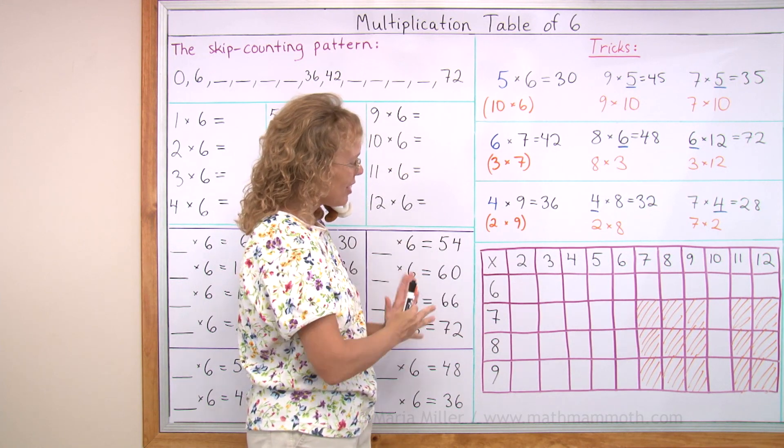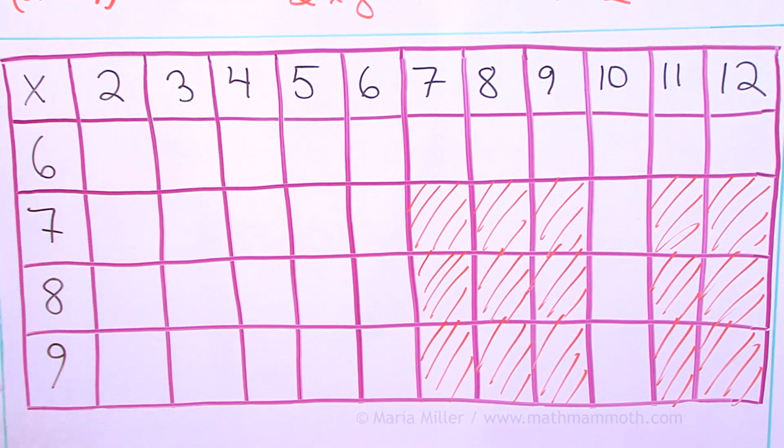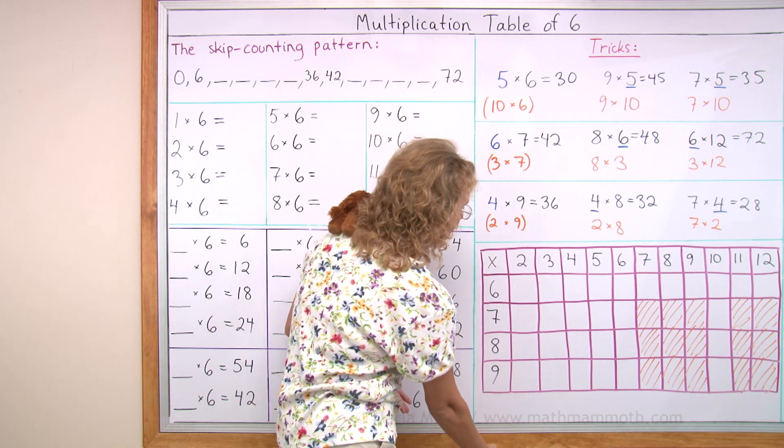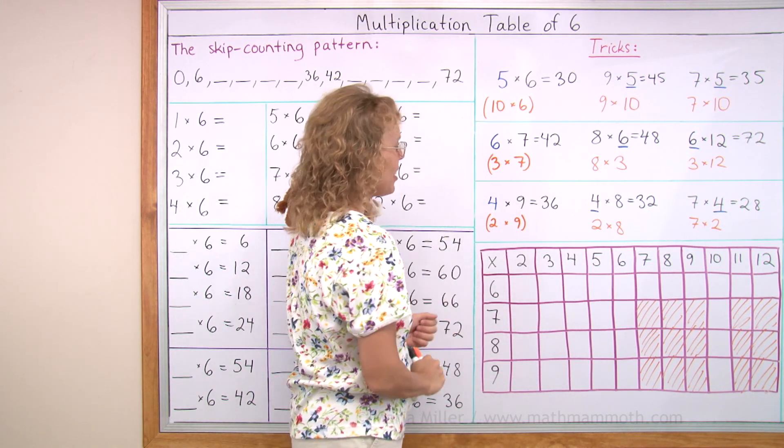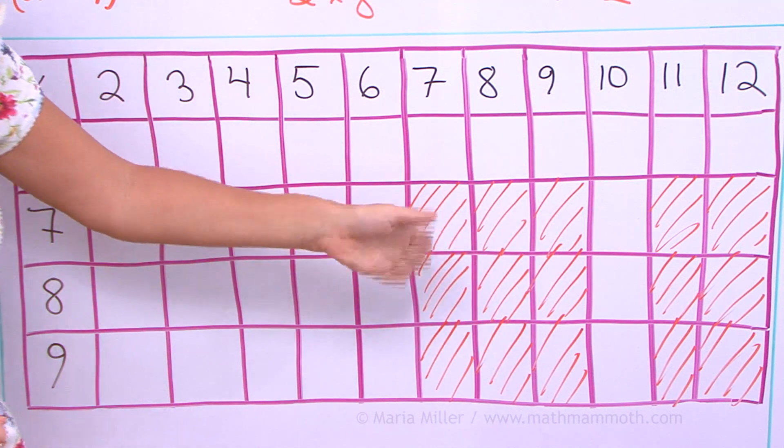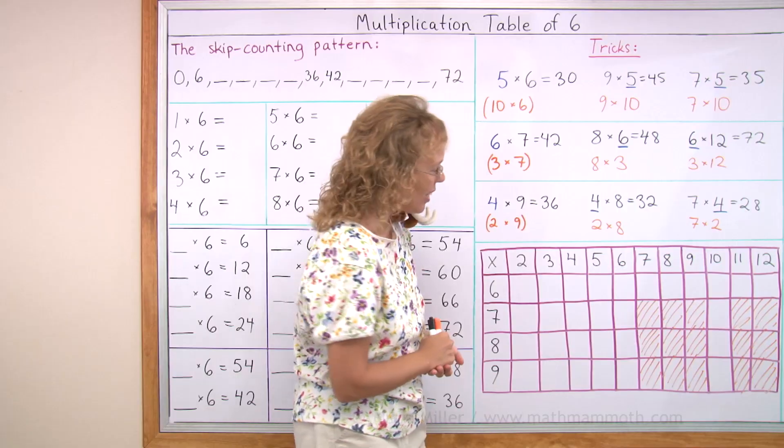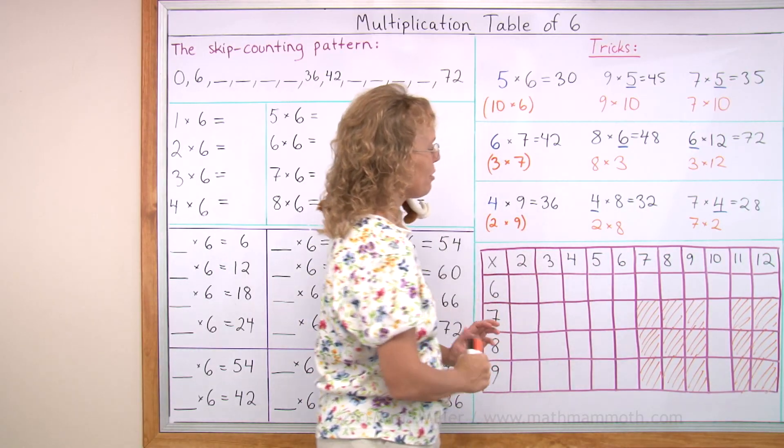And now we're going to look at the multiplication table here. It's part of the complete multiplication table. I didn't have space to write it from 0 all the way down to 12. So I just wrote part of it. And these squares here that are shaded out are the multiplication facts we haven't yet studied. But we have studied most of it.